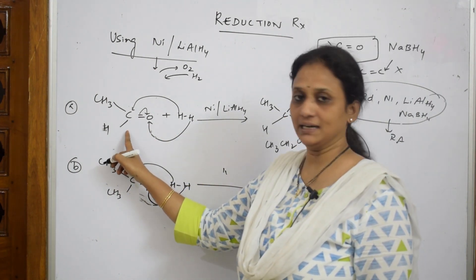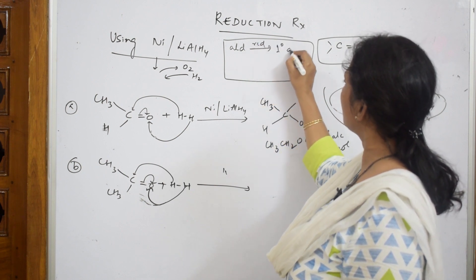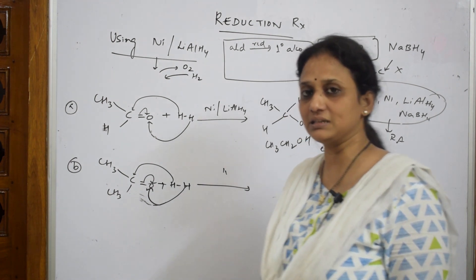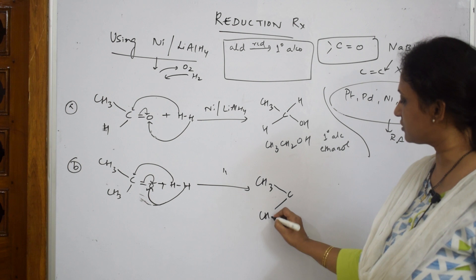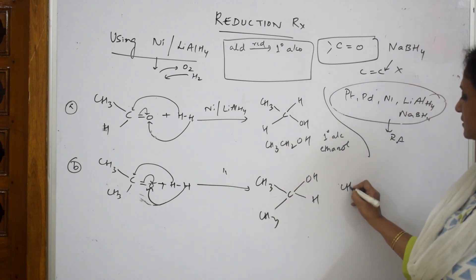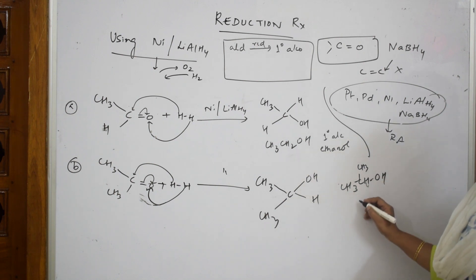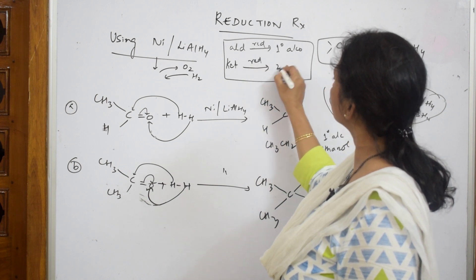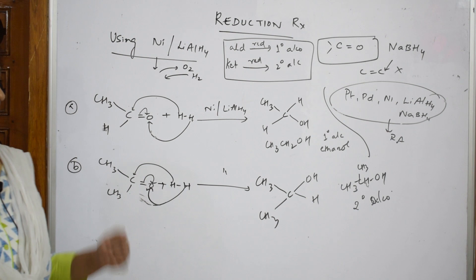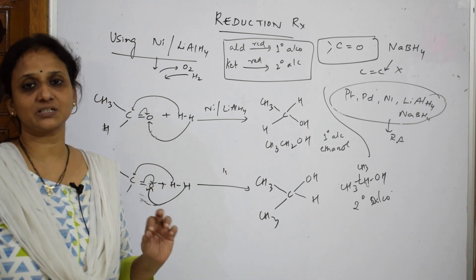So the important rule: aldehydes on reduction give primary alcohols. For ketones: CH3COCH3 on reduction gives CH3–CH(OH)–CH3, which is a secondary alcohol. So ketones on reduction give secondary alcohols. Please remember this — I will give you hints on how to remember which product you get from which reaction when we complete organic chemistry.